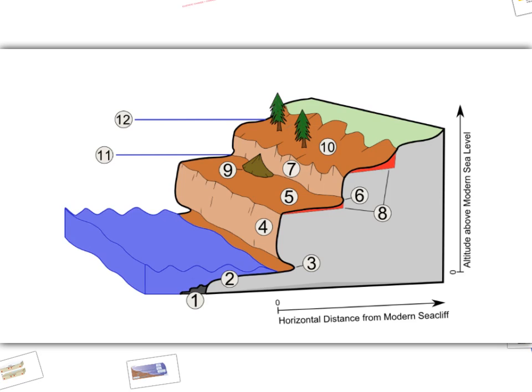Another feature created by eustatic change is a raised beach. This was at one time located at sea level and shows features such as a deltaic deposit. The falling sea level has left them hanging above the current base level.